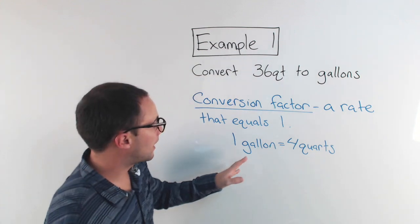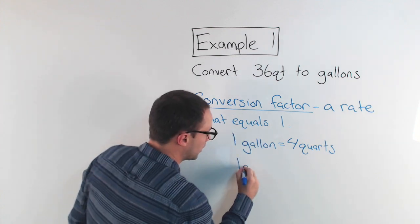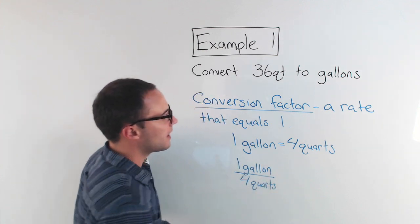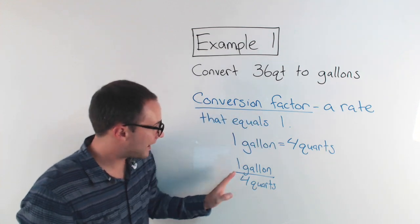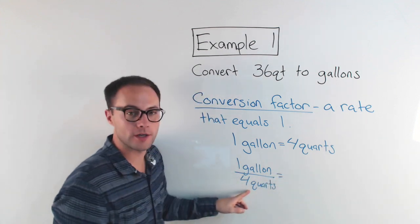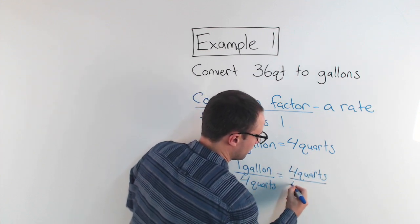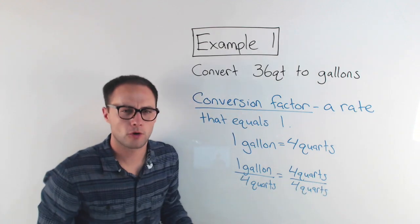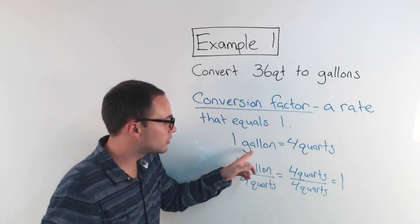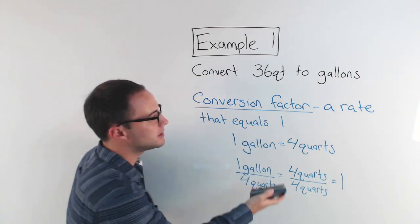So I know that one gallon is equal to four quarts. Now this is a rate. I can write it like a ratio. I can replace that with a colon, or I could write it like a fraction, one gallon over four quarts. And the reason this is a conversion factor is that this rate equals one. One gallon is the same as four quarts. So I could just simply substitute. Instead of a gallon, I could put, well, that's the same as four quarts over four quarts. Well, four quarts over four quarts is one. So that's why we say a conversion factor is a rate. We've got two different units that equals one.